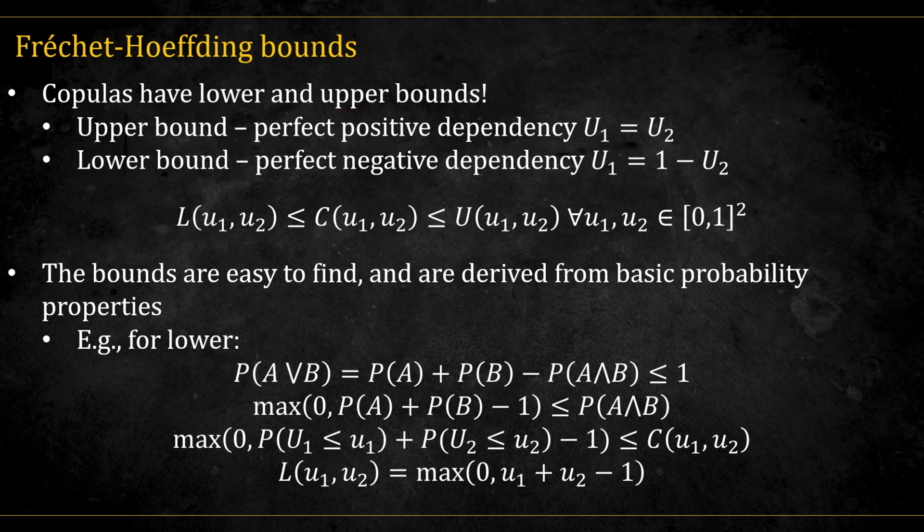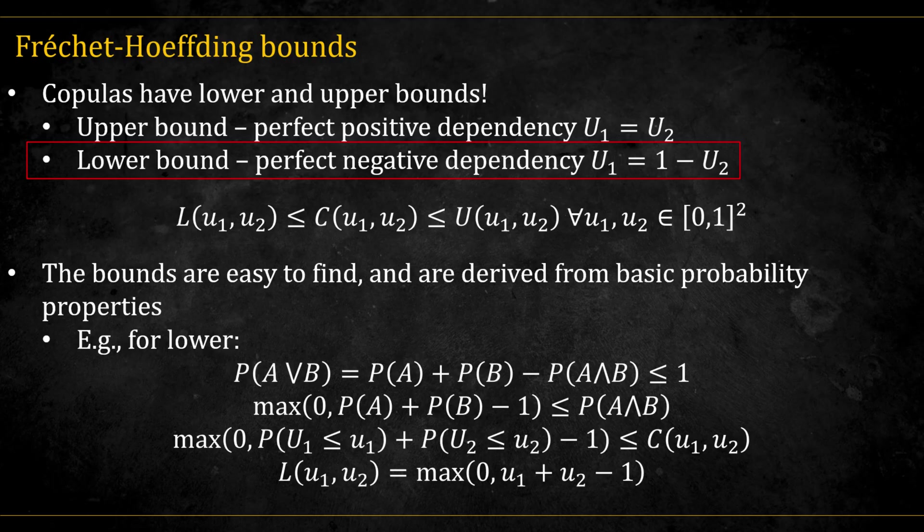The lower bound represents perfect negative dependence, where the second variable is equal to the complement of the first variable. Any valid copula function has to lie between these two bounds.